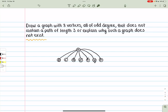So for that reason, such a graph might not exist. There might not be a graph with 8 vertices, all of odd degree, that does not contain a path of length 3. One might exist like that. Thanks for watching.